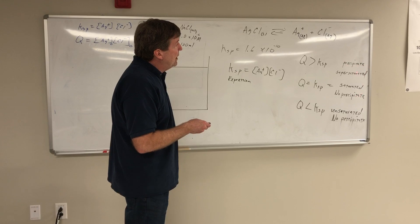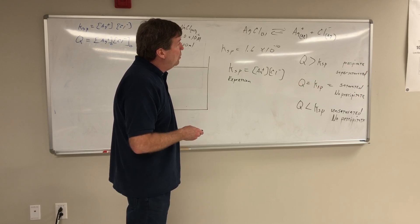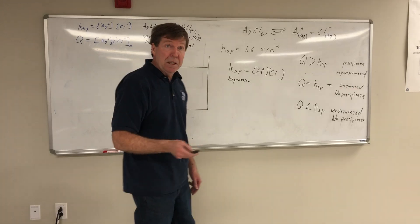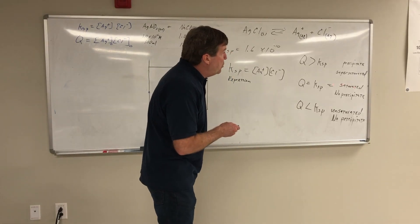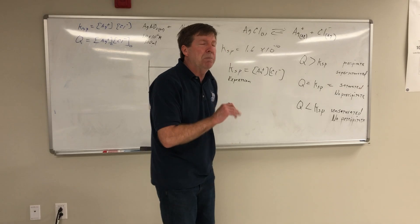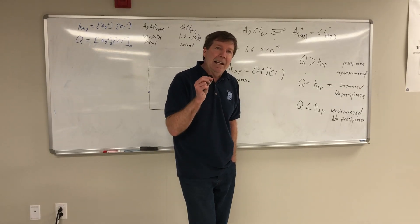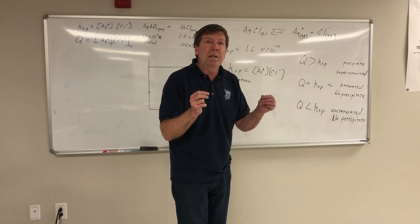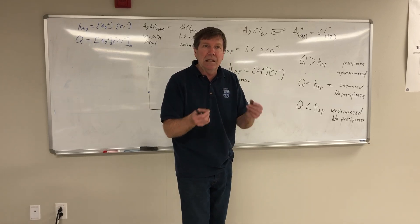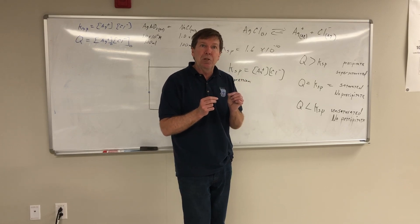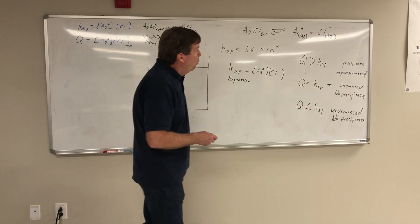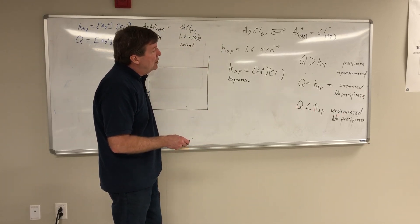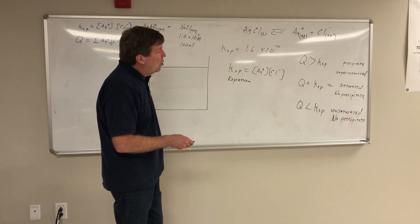If Q equals KSP, then you're going to see no precipitate, but you would in fact have a saturated solution. If you do have a perfectly saturated solution and you add small amounts of both ions, they would come together and form a little flake of precipitate. Saturated means Q equals KSP — no visible precipitate. If Q is less than KSP, that's going to be unsaturated and there's going to be no precipitate.